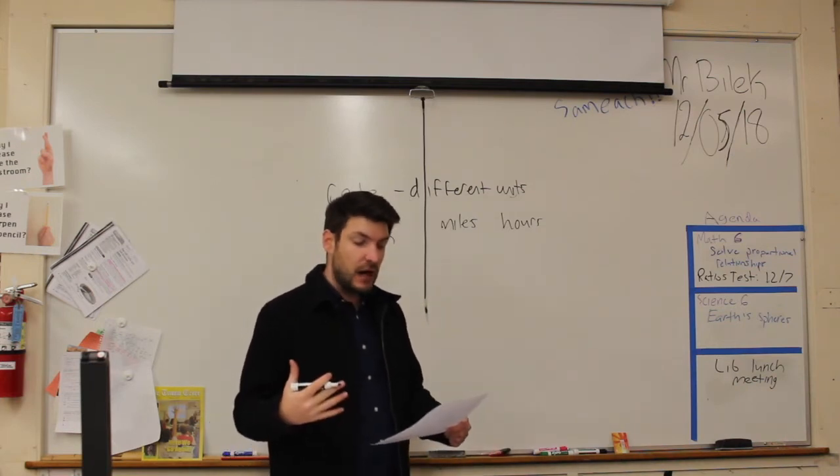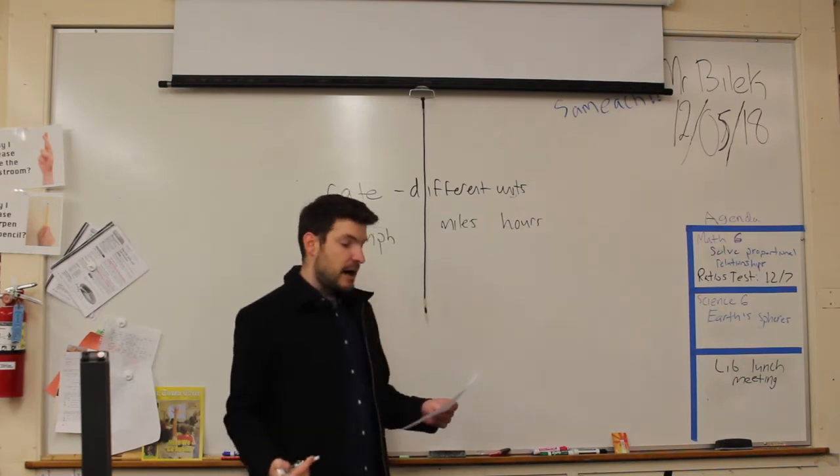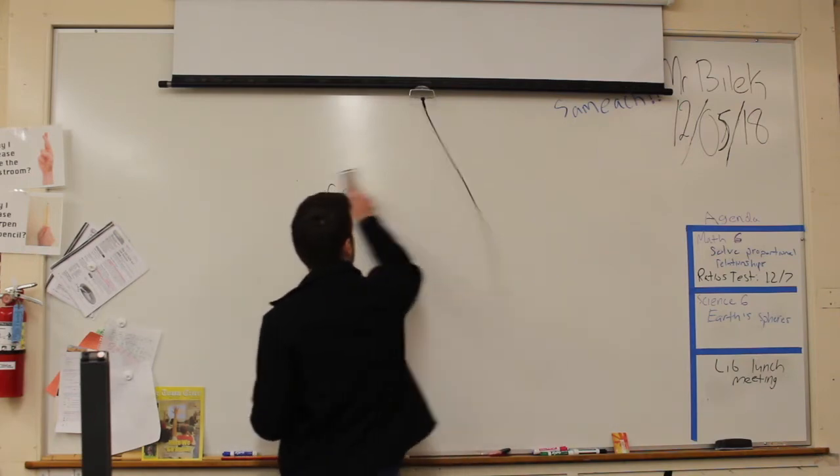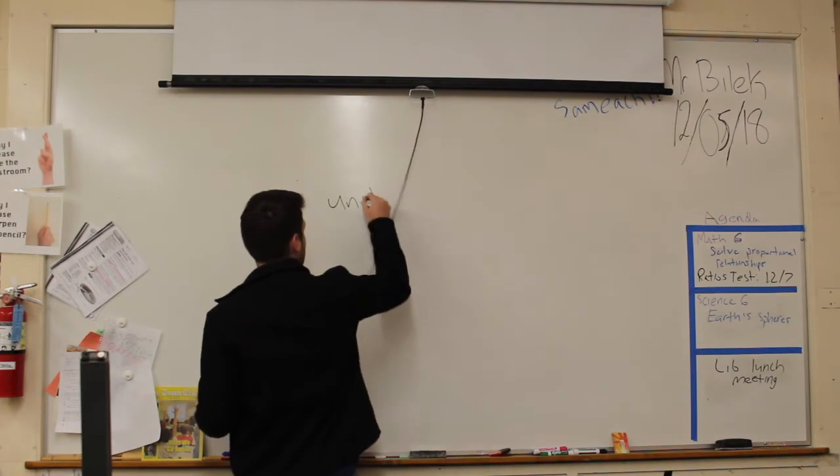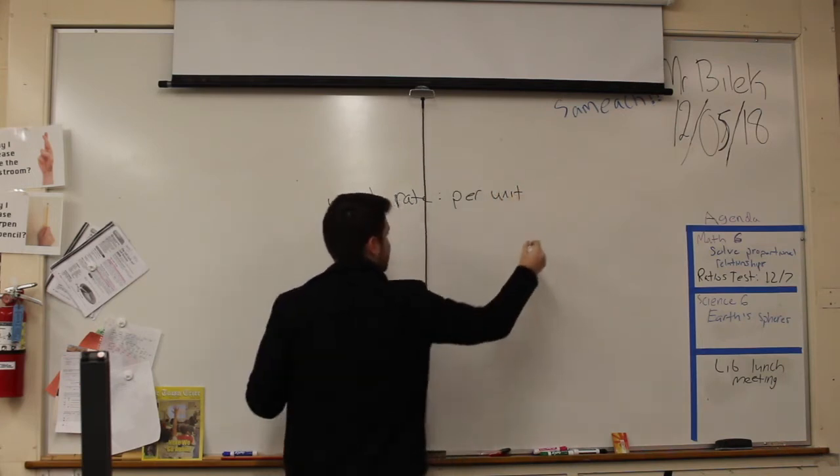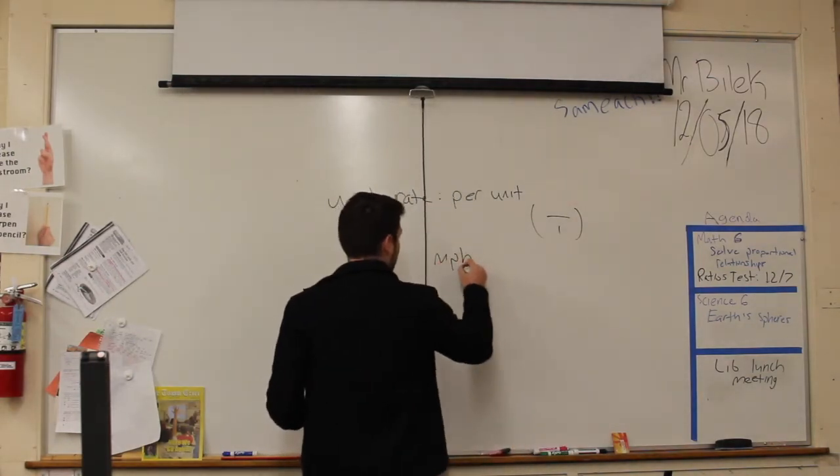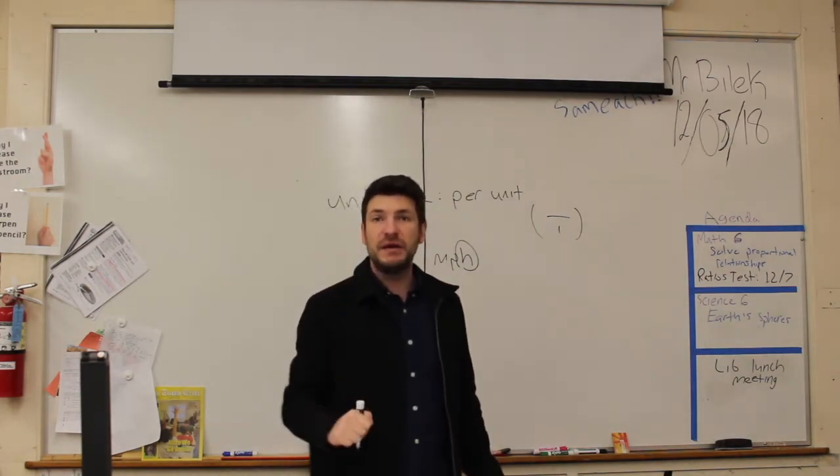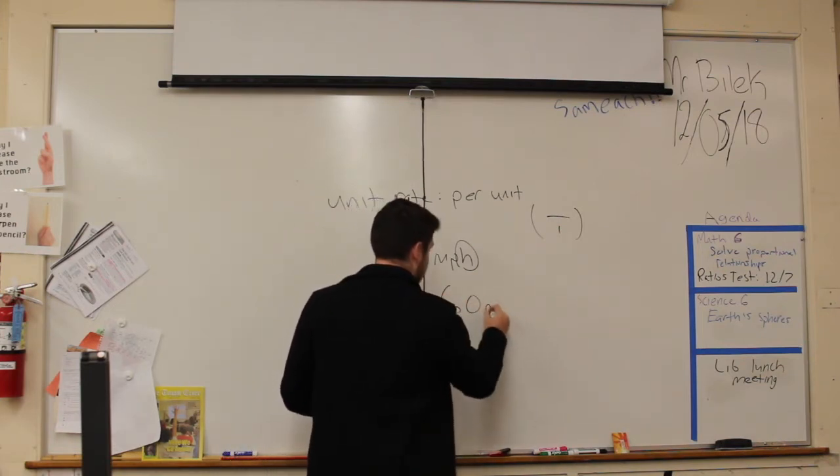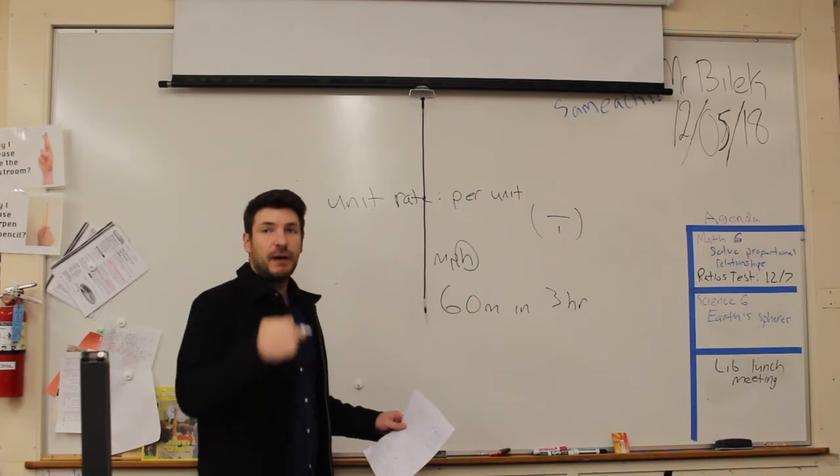And then we have a unit rate. Now, a unit rate is comparing these different units, but it's giving it a denominator of one. So we're comparing it. So unit rate, the best way I can remember it is per unit or a denominator of one. So miles per hour. You look at miles per hour, this hour right here, that's one hour. How many miles you travel in one hour? So that's a unit rate. But if I look at say 60 miles in three hours, and I ask you to find the unit rate, well, you're asking me to find the miles per one hour.